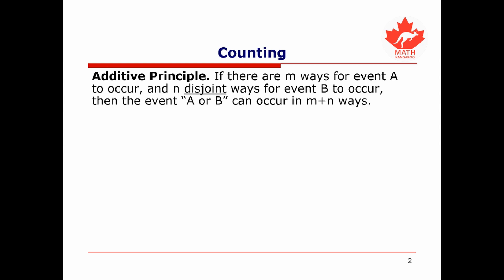The use of the word 'disjoint' here signifies that event A can occur or event B can occur, but not both.